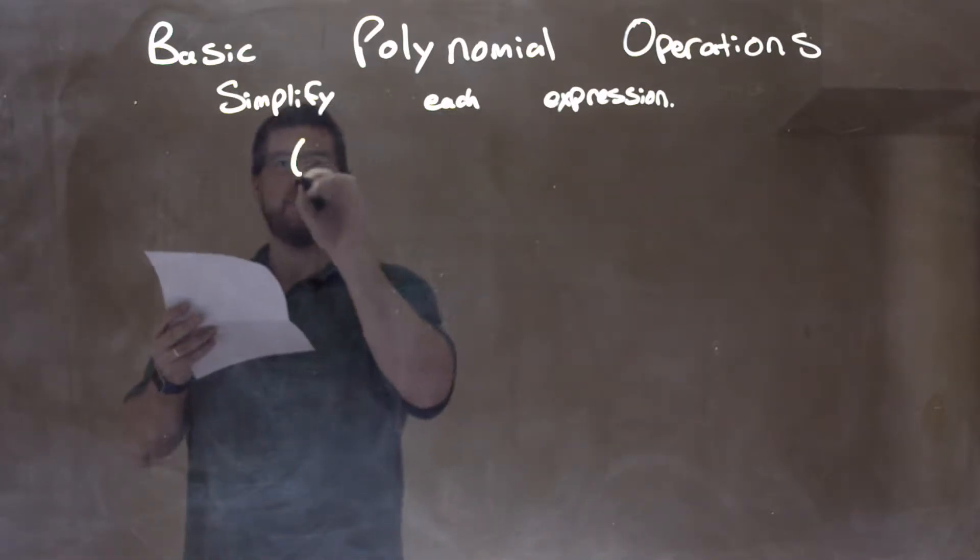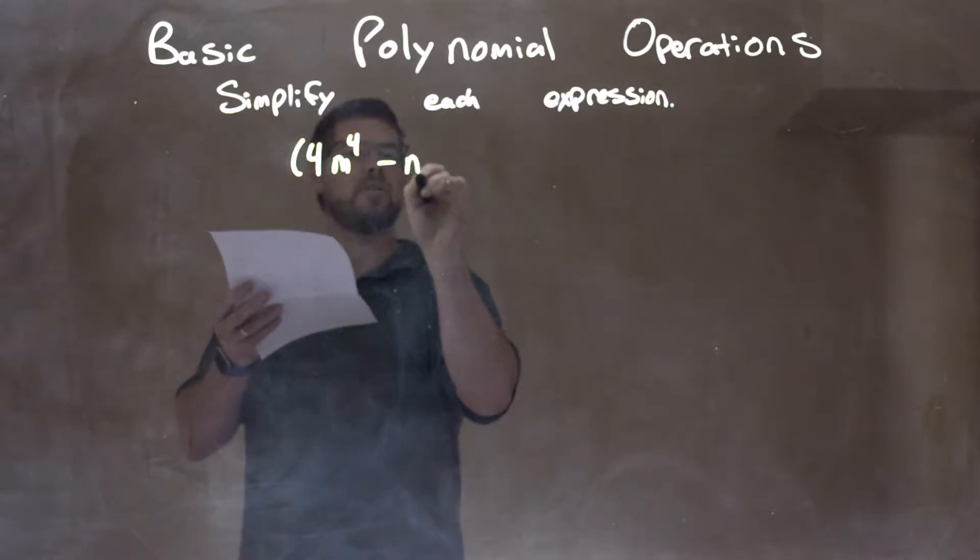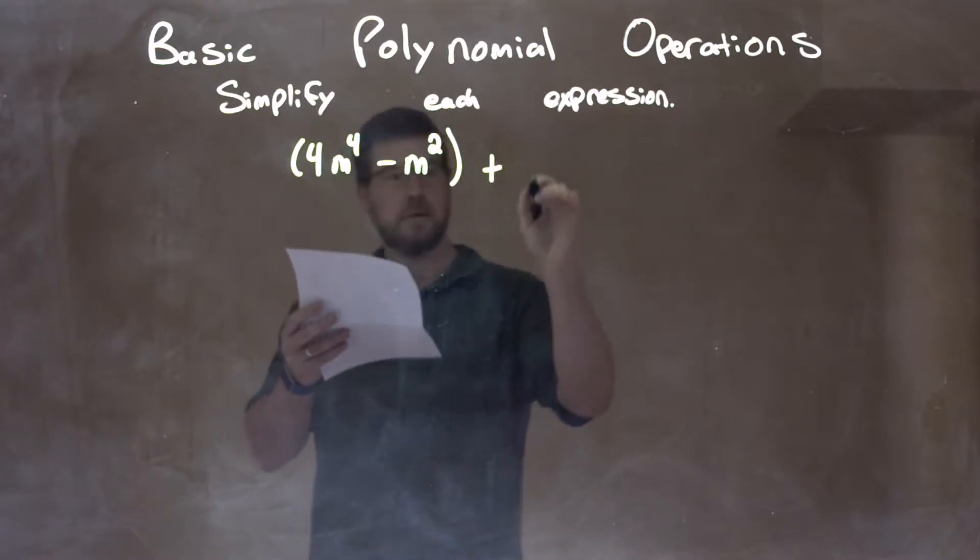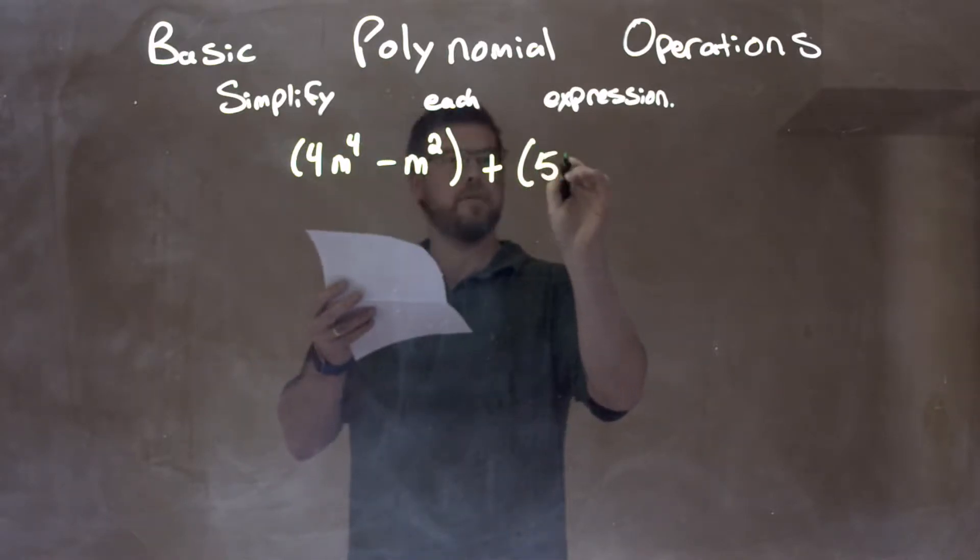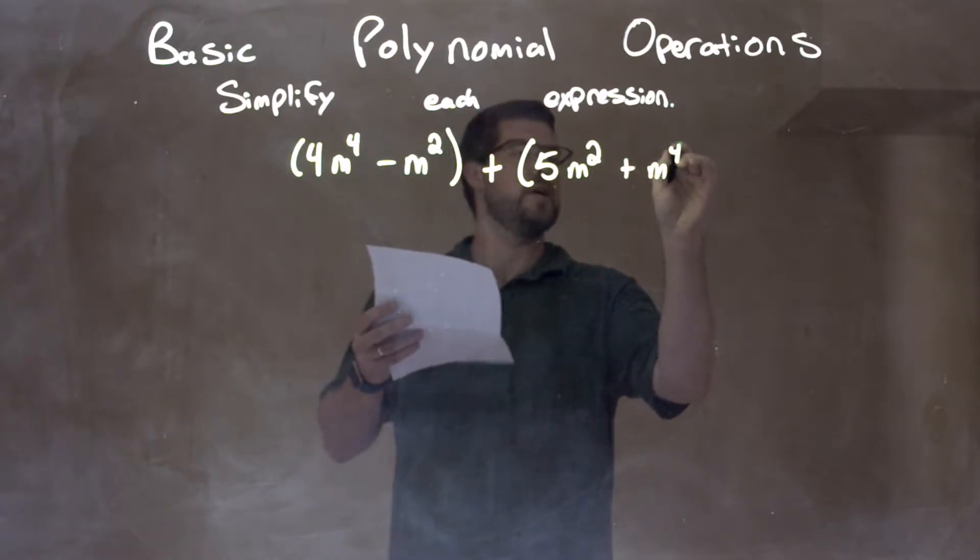We have 4m to the 4th power minus m squared, then plus 5m squared plus m to the 4th.